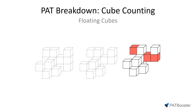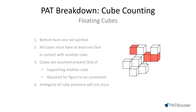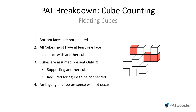Let's focus on some of these red cubes and run through the rules previously outlined. Rule number one was that the bottom faces are not painted. It's important to note that this rule only pertains to the bottom base layer of the figure as it's lying on the ground, and therefore paint can never reach it. In contrast, a floating cube can have its bottom face painted since it's not obscured by the ground, so this rule has not actually been violated.